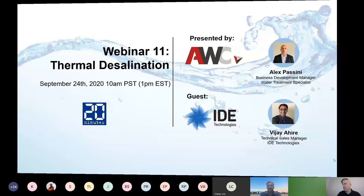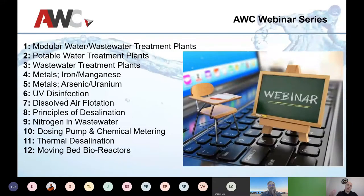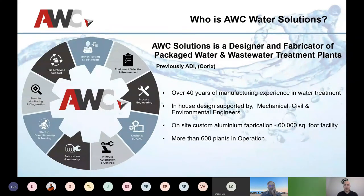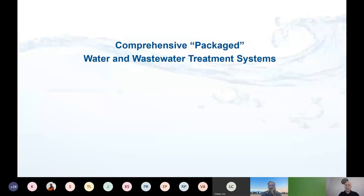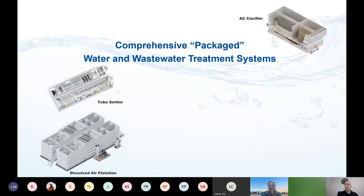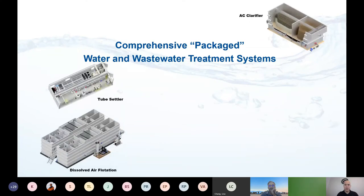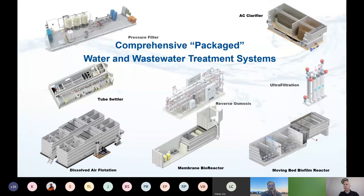A quick background on the webinars we're going through — we started with a series of 12 and we're going to be exploring a few more options. AWC has close to 600 water treatment plants and wastewater treatment plants worldwide. Everything is manufactured in British Columbia. We divide everything into multiple categories: modular water treatment for potable, wastewater, and of course skid-mounted.